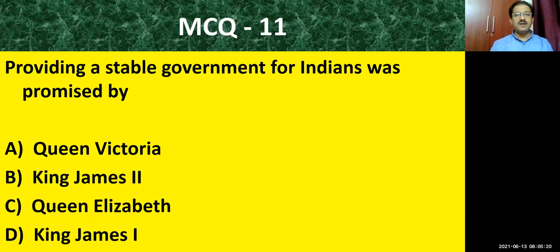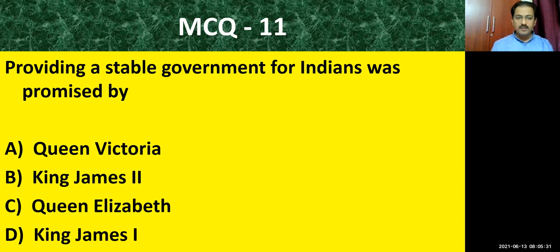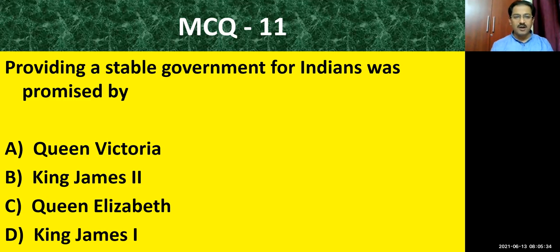Question number eleven: providing a stable government for Indians was promised by — options are: Queen Victoria, King James Second, Queen Elizabeth, King James First. The correct answer is Queen Victoria. Congratulations.